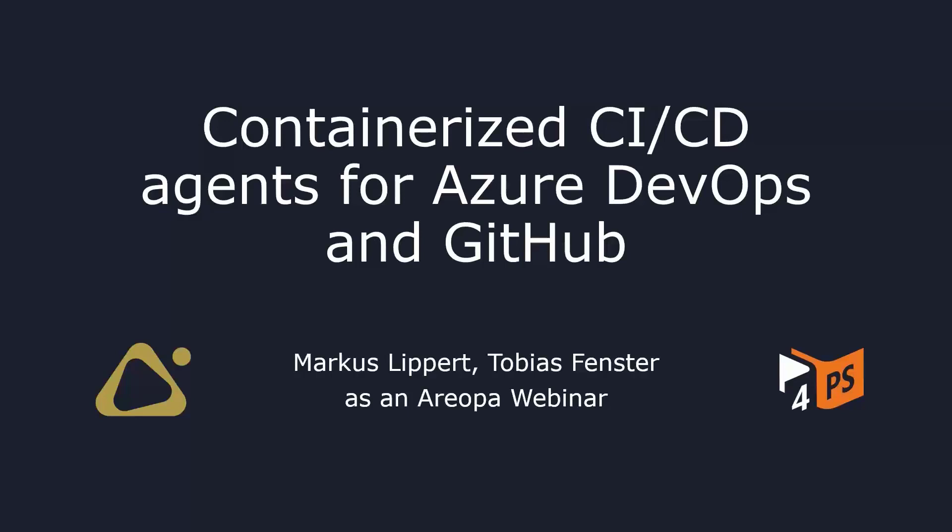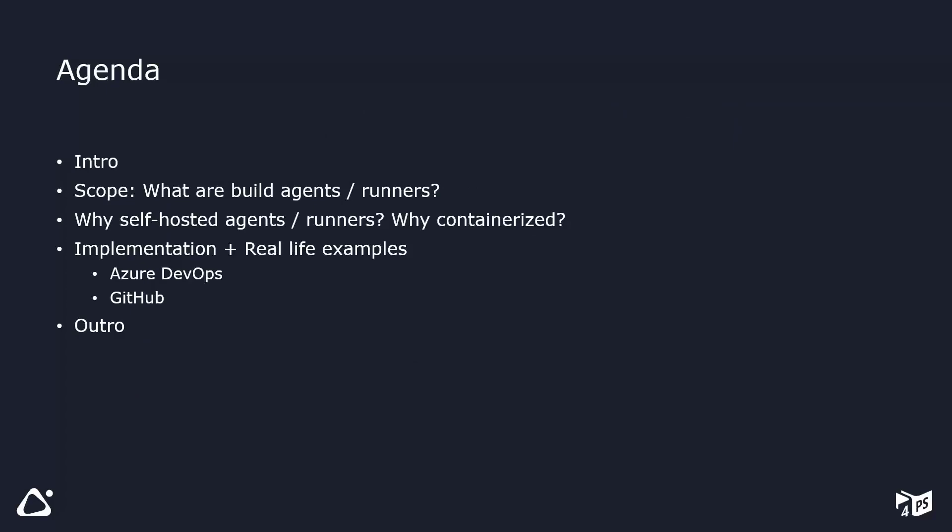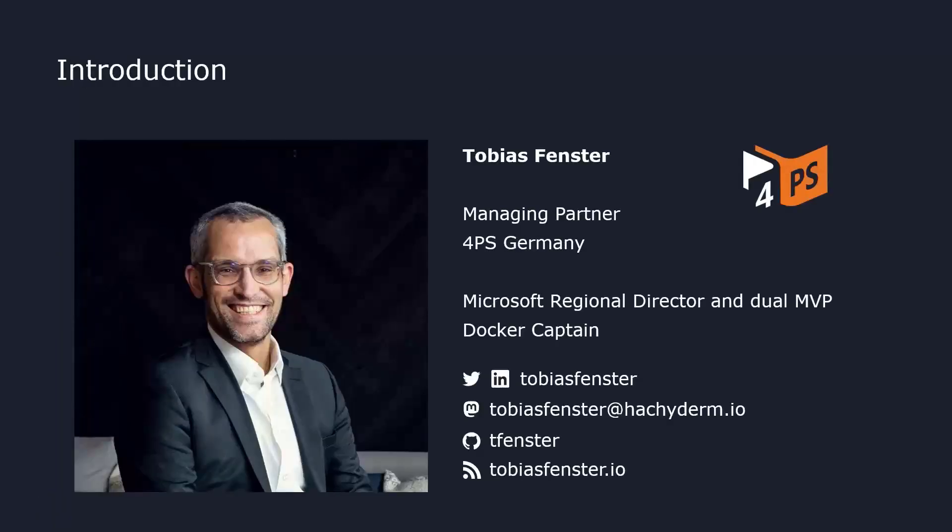Welcome from our side as well. We'll introduce ourselves in a second. The topic, as Luc already said, is containerized CI/CD agents for Azure DevOps and GitHub. What we're going to talk about today is: what are build agents, what are runners, why it makes sense to have self-hosted agents and runners, and why it makes sense to have containerized agents and runners. The first part explains why we're doing this, and then we'll look at the actual implementation with real-life examples from both Markus and myself.